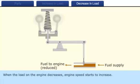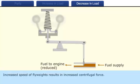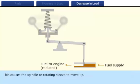When the load on the engine decreases, engine speed starts to increase. The rotational speed of the ball arms also increases. Increased speed of flyweights results in increased centrifugal force. The centrifugal force exceeds the speeder spring force causing flyweights to rotate away from the axis of rotation. This causes the spindle or rotating sleeve to move up.